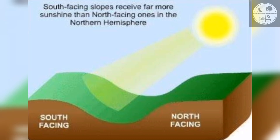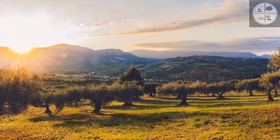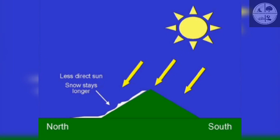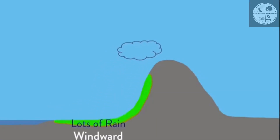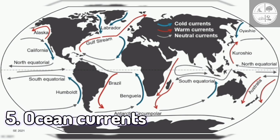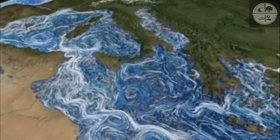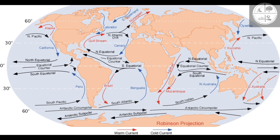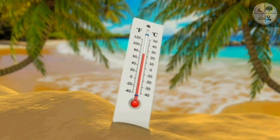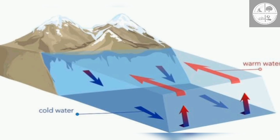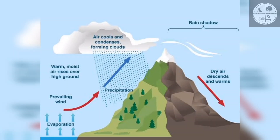In the northern hemisphere, south-facing slopes receive more sunlight, making them warmer. Windward sides of hills get more rainfall while leeward sides are drier. Number five: ocean currents. Ocean currents carry warm or cold water across the globe, influencing climate. Warm currents raise coastal temperatures while cold ones cool down coastal regions and reduce rainfall.